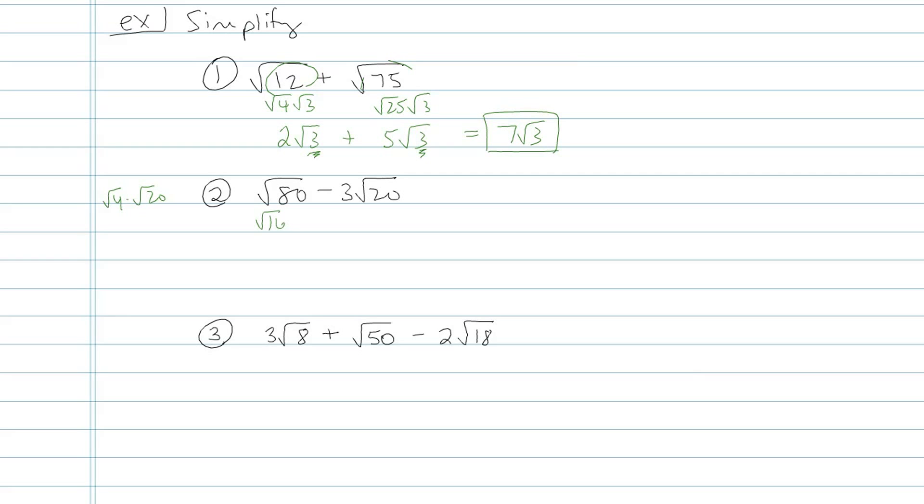I can make 80 square root of 16 times square root of 5. And then that's going to become 4 root 5. There's my first one simplified.